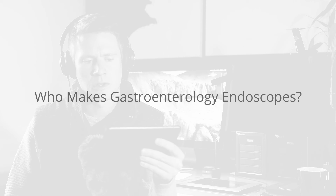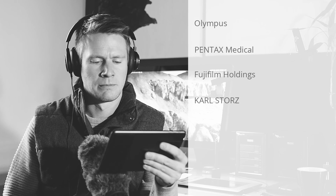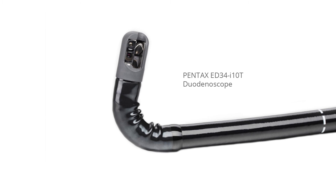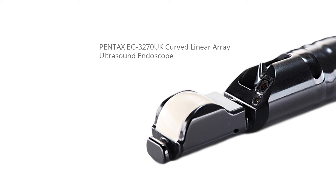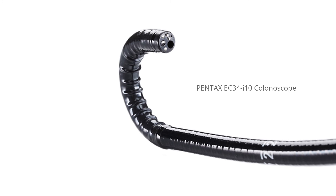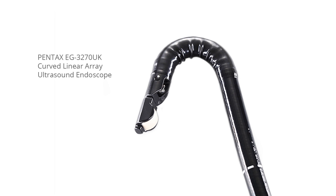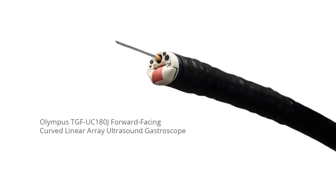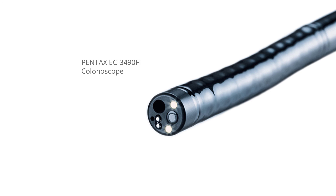Some of the main companies who make gastroenterology endoscopes include Olympus, Pentax Medical, Fujifilm Holdings, and Karl Storz. Product examples shown include an Olympus gastroscope, Pentax duodenoscope, Pentax curved linear array ultrasound endoscope, Pentax gastroscope, Pentax colonoscope, Pentax radial array ultrasound gastroscope, Olympus forward-facing curved linear array ultrasound gastroscope, and a Pentax colonoscope.